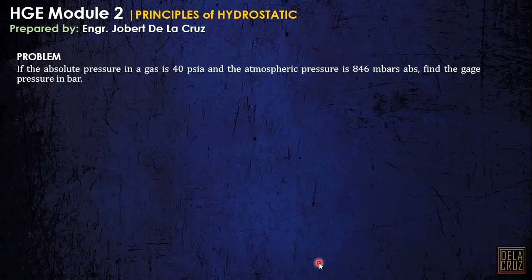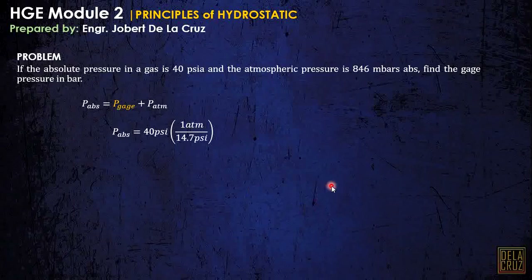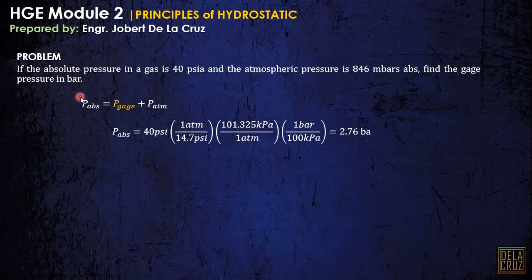How about this: if the absolute pressure in a gas is 40 psi absolute and the atmospheric pressure is 846 millibars absolute, find the gauge pressure in bar. Take note that absolute pressure equals gauge pressure plus atmospheric pressure. The problem asks us to find the gauge pressure in bars, so let's convert the given values to bars.